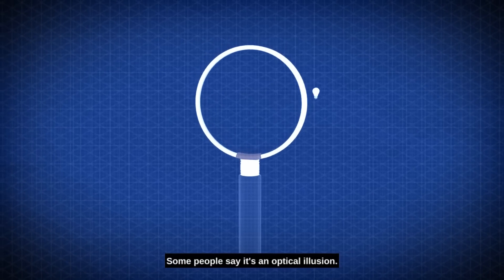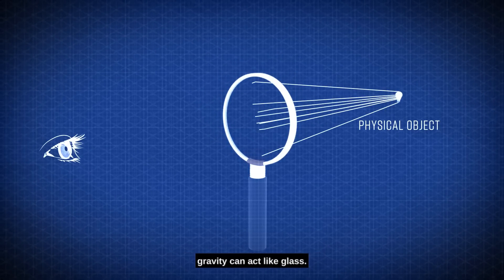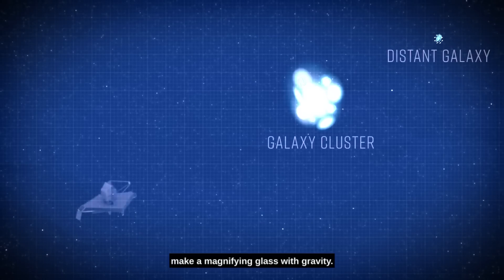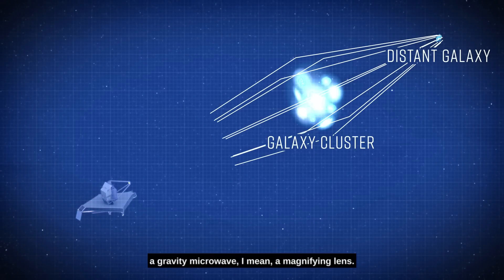Some people say it's an optical illusion. You see, according to Einstein, gravity can act like glass. With glass, of course, you can make a magnifying glass. With gravity, you too can bend space and time to create a gravity magnifying lens.